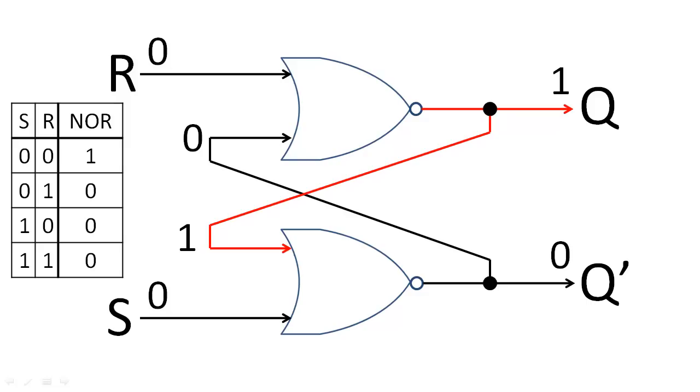Now, let's change R to 1. Because R is 1, the state will reset to 0. Because both the state and S are 0, Q prime will be 1.